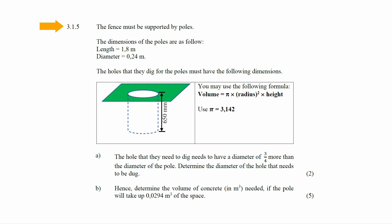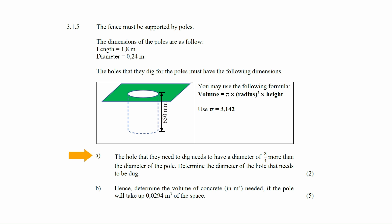In question 3.1.5, the fence must be supported by poles. The pole dimensions are: length 1.8 meters and diameter 0.24 meters. The hole depth is 650 millimeters. The volume formula is: V = π × r² × h, where π = 3.142. In question 3.1.5a, the hole diameter must be three-quarters more than the pole diameter — determine the hole diameter.